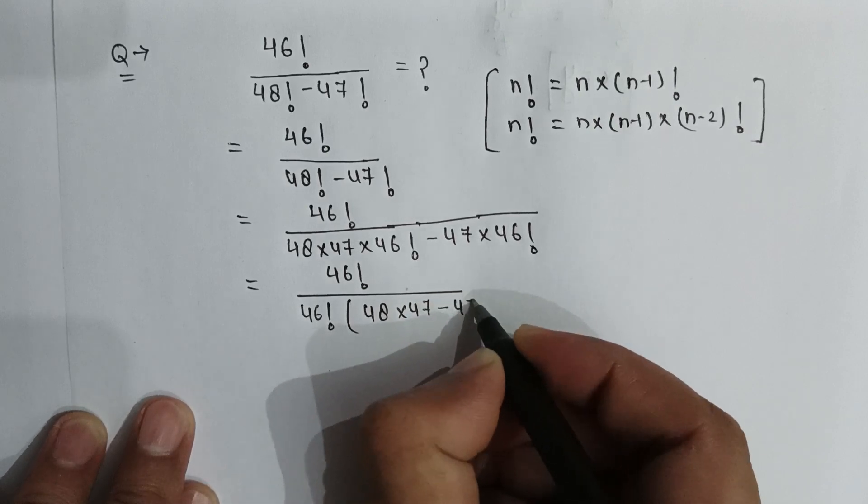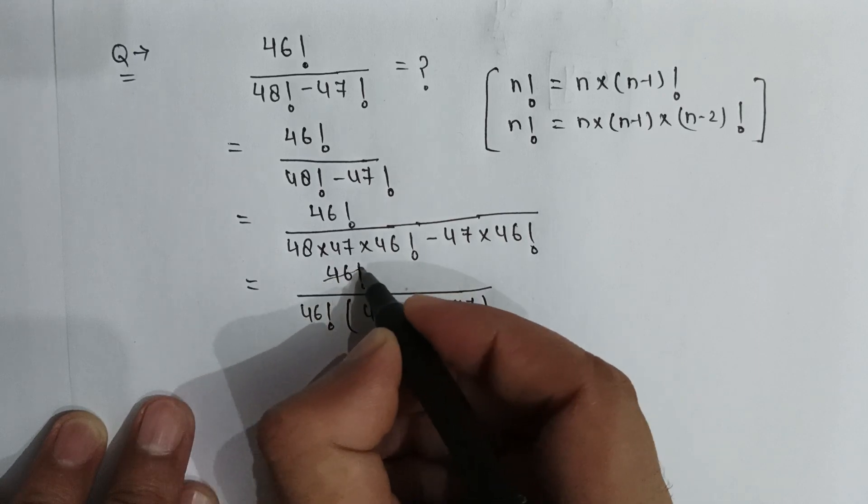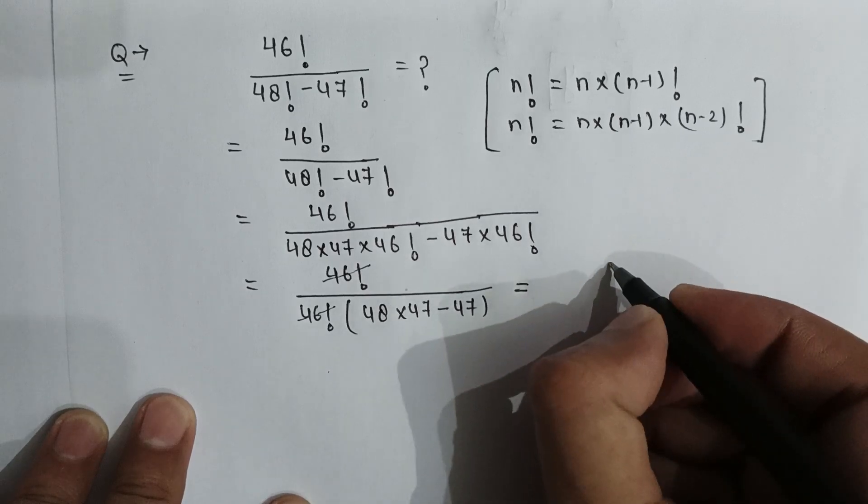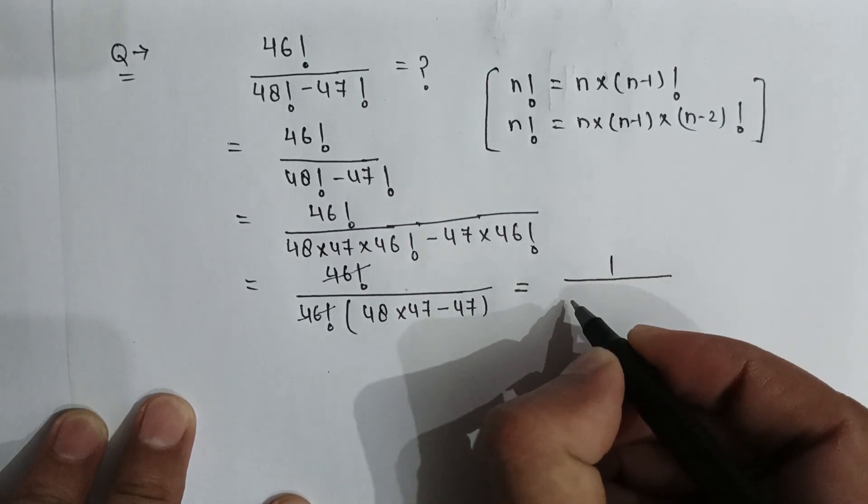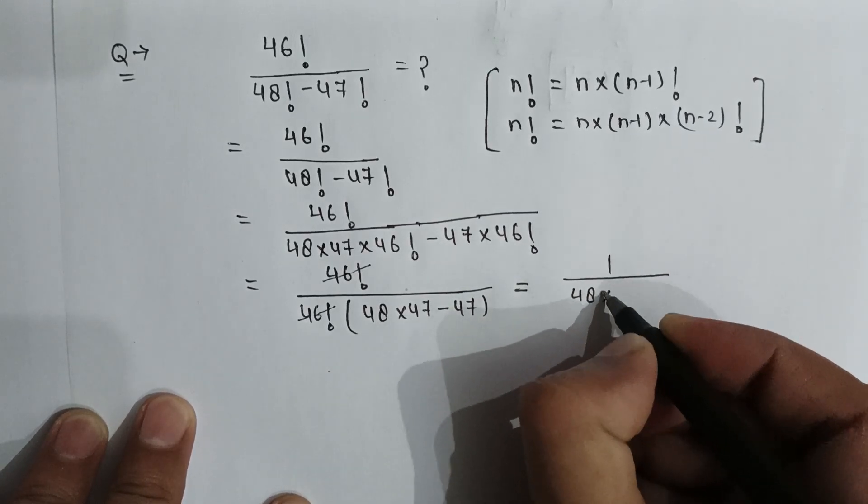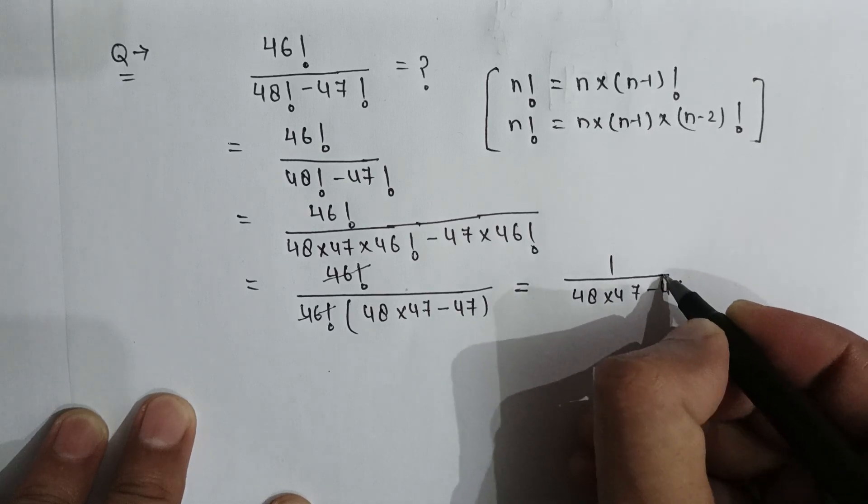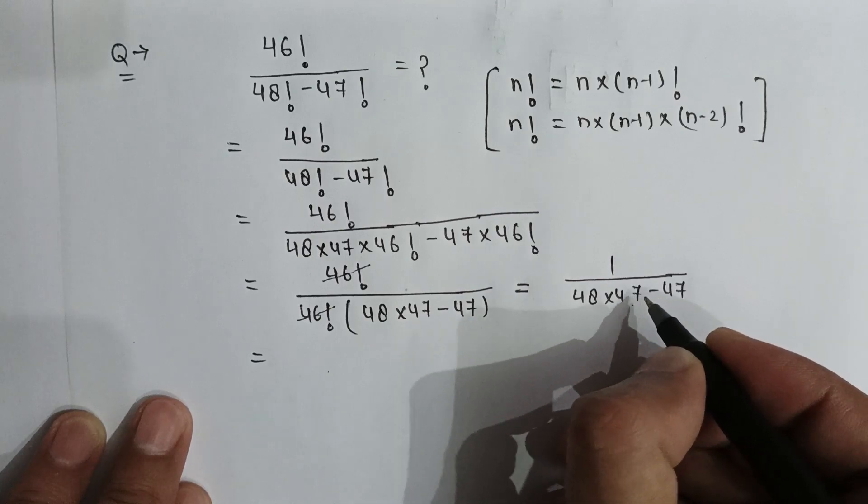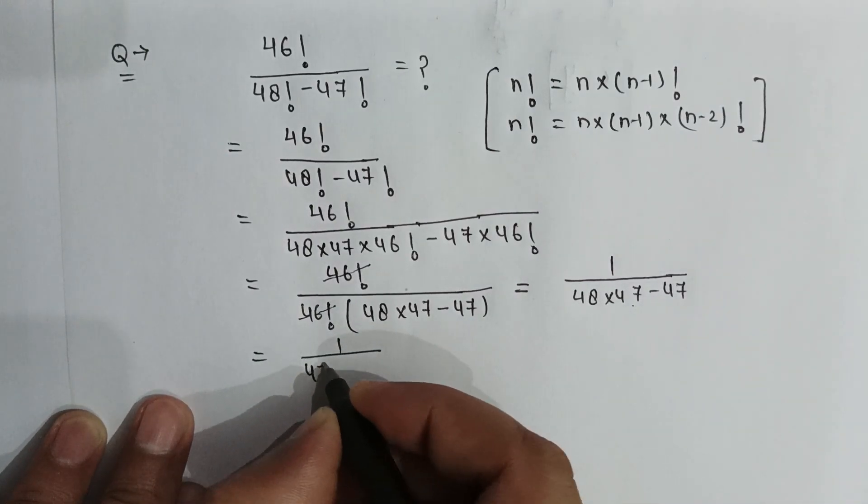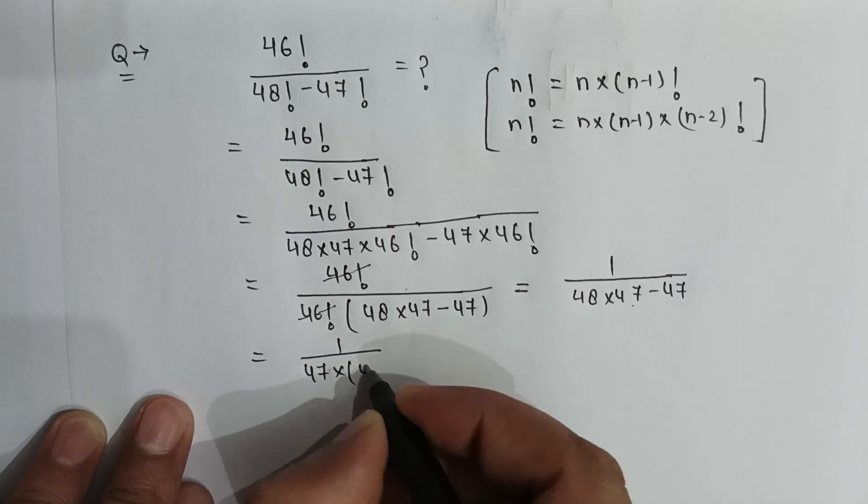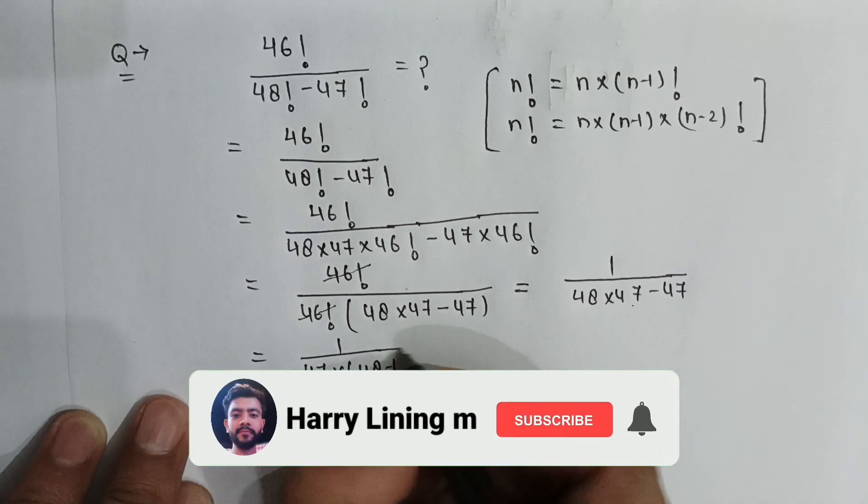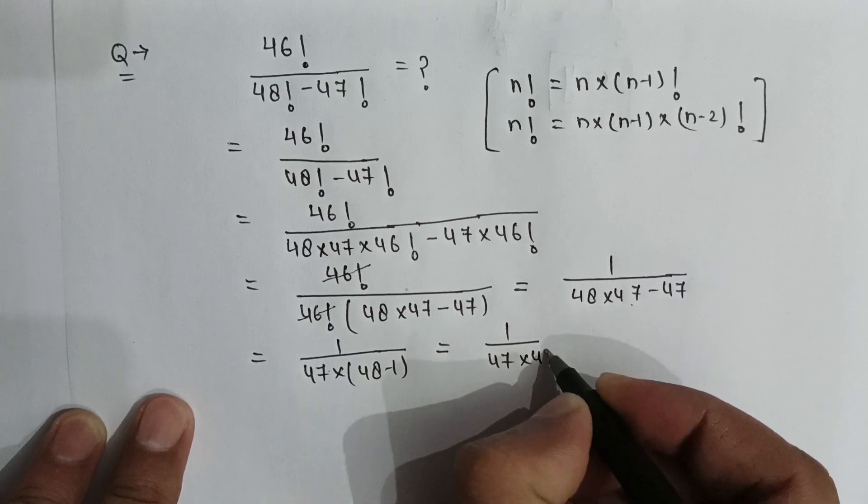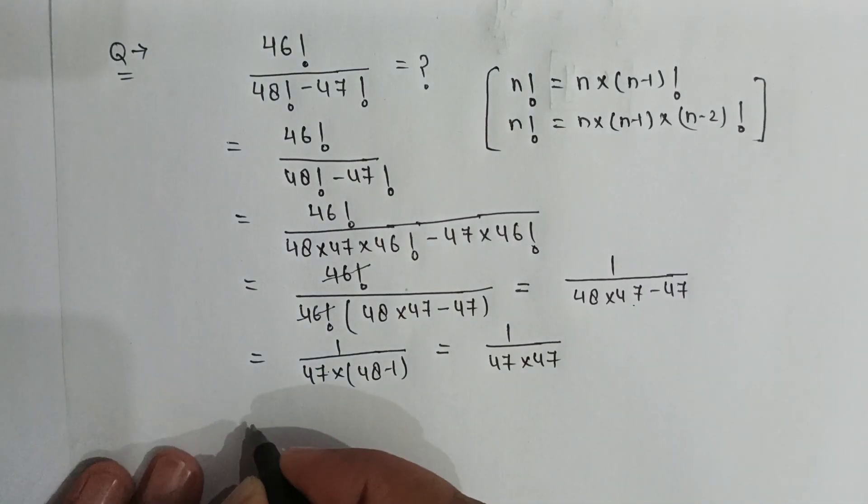46 factorial will be cancelled out with 46 factorial. So it will be 1 over 48 multiplied by 47 minus 47. If we take 47 common from these two terms, then it will be 1 over 47 multiply by 48 minus 1.